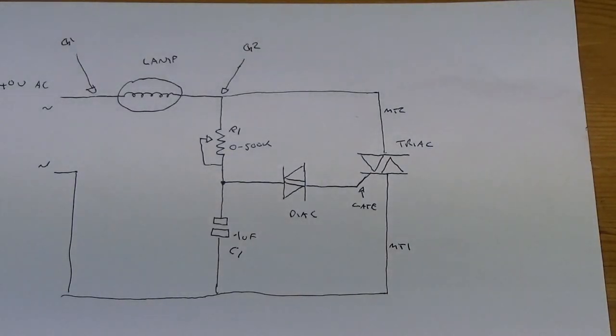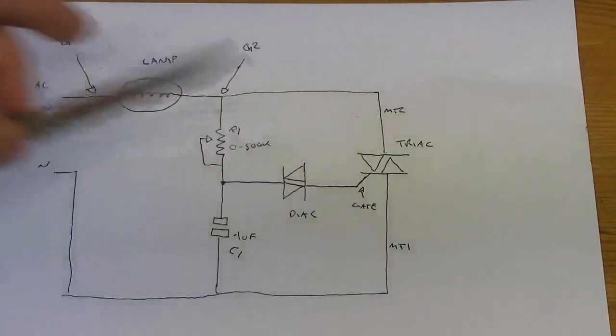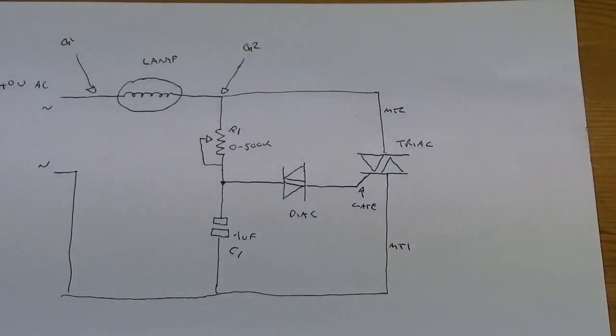And here's the diac. It's an acronym for diode alternating current. Basically it's two diodes facing each other, and this component can conduct in the negative half cycle and the positive half cycle. It won't conduct at zero volts. I like to look at it as like a zener diode that works in both directions.